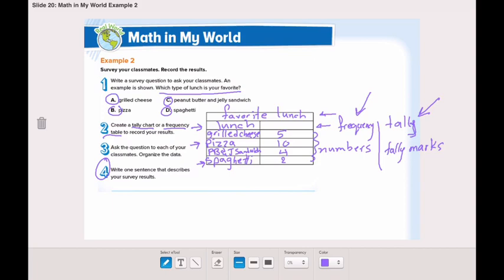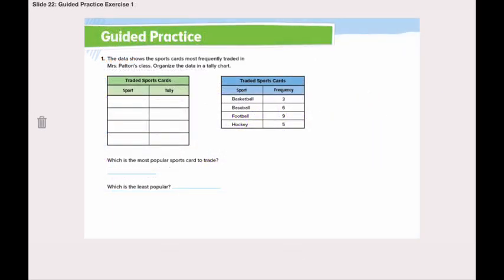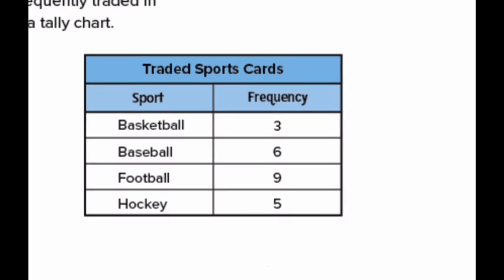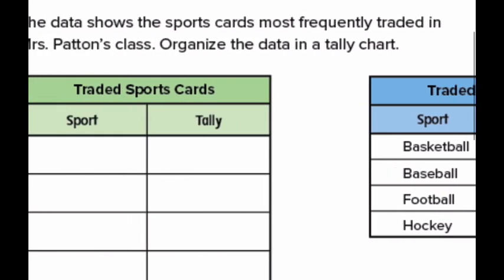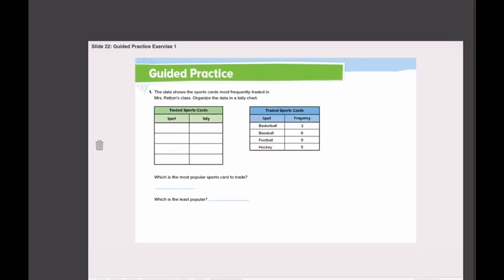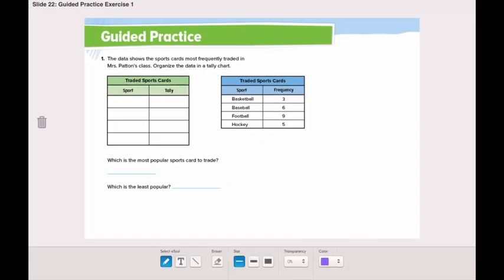Now let's go through the guided practice together. The data shows the sports cards most frequently traded in Mrs. Patton's class. Organize the data in a tally chart. Here we have a frequency table — we know because it has numbers. We need to put this data into a tally chart. Let's start. Here we have the sports: basketball.